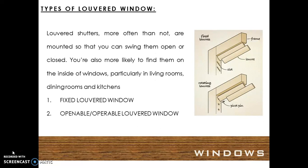Types of louvered windows. Louvered shutters are most often mounted so that you can swing them open or keep them closed. You are also more likely to find them on the inside of the windows, particularly in the living rooms, dining rooms, and kitchen.